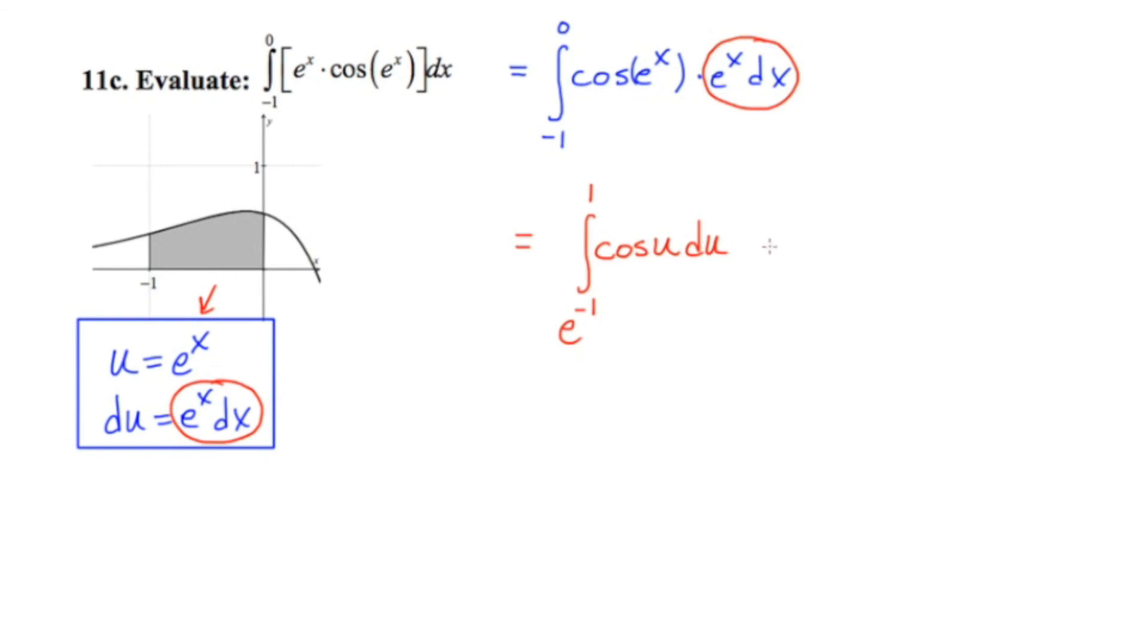So now I've got to ask myself, what is the antiderivative of cosine? And the answer to that would be sine u. And our lower limit is e to the negative one, and our upper limit is one.